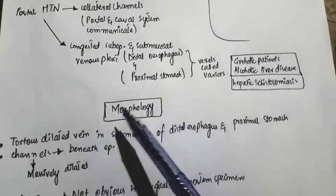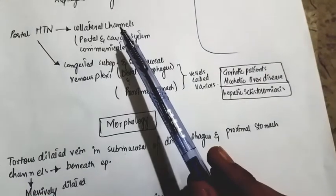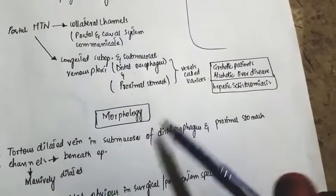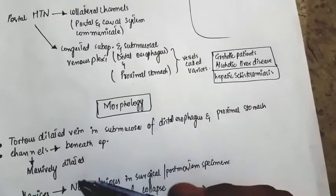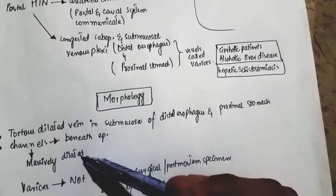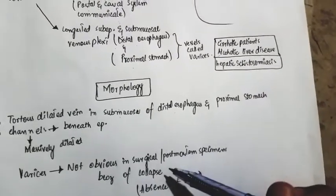The collateral channels which are formed due to portal hypertension form beneath the epithelium, below the epithelium, and these channels will be massively dilated.